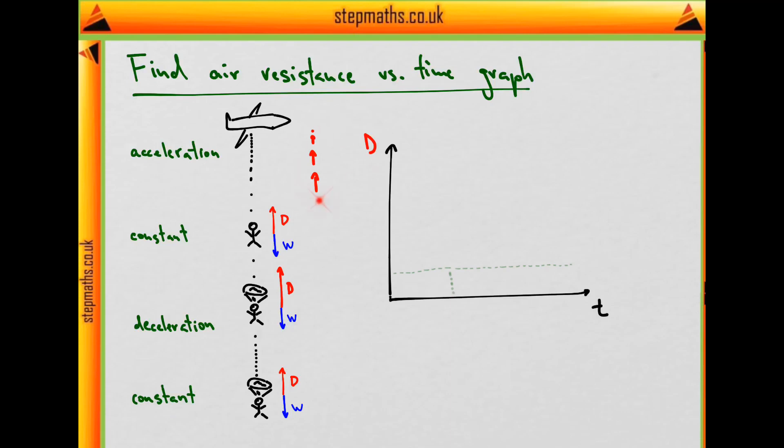So we see an increase, a gradual increase in the drag force as the parachutist is speeding up, and then constant force when the equilibrium is reached and the parachutist is moving at a constant speed. So we see a gradual increase and then constant drag force which is equal to the weight.